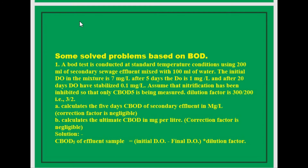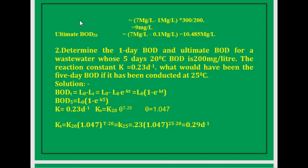The formula used is: CBOD of effluent sample equals (initial DO minus final DO) multiplied by the dilution factor. The initial DO is 7 mg/L and the final DO after 5 days is 1 mg/L. Substituting into the formula: (7 mg/L minus 1 mg/L) multiplied by 300/200. After calculating, the answer is 9 mg/L.